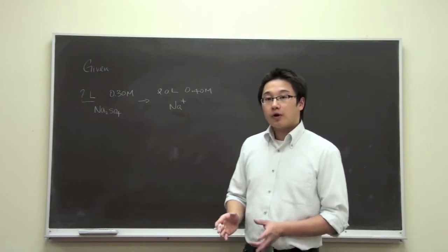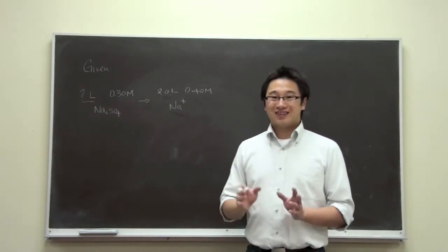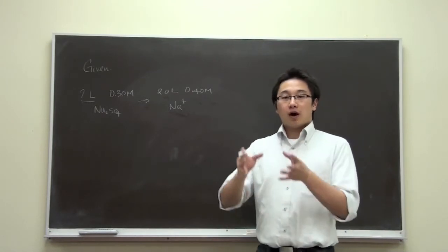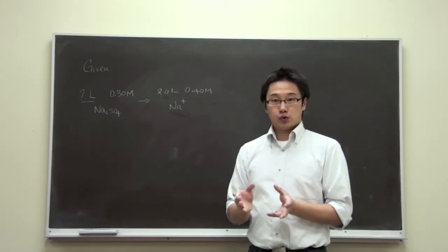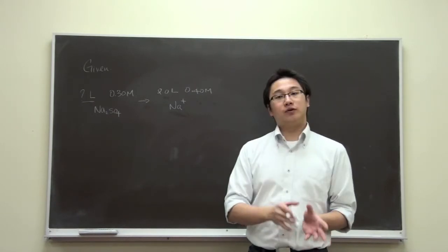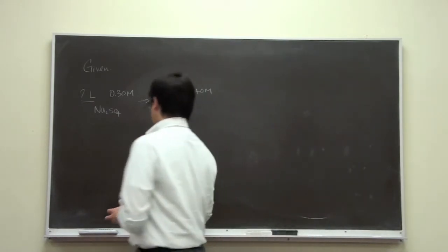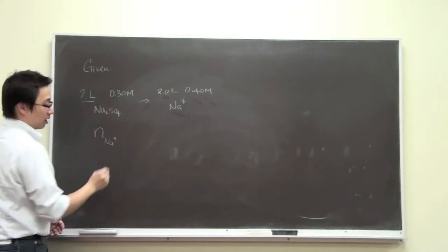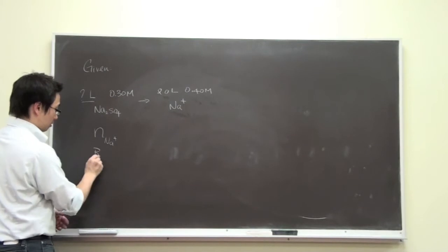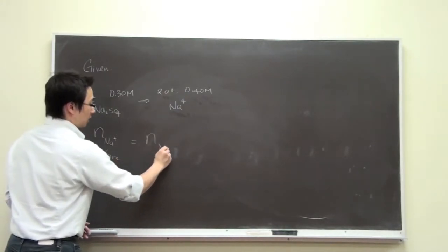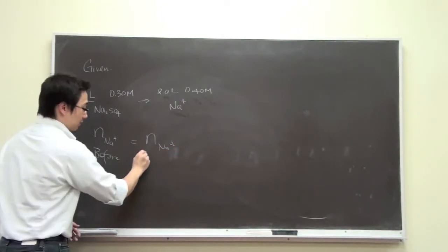So remember that when we are dealing with dilution problems or when we have dilution process, the number of the solute is going to be constant before and after dilution. Which means that the number of moles of sodium ion before is going to equal to the number of moles of sodium ion after.